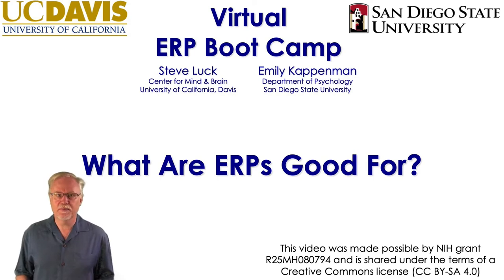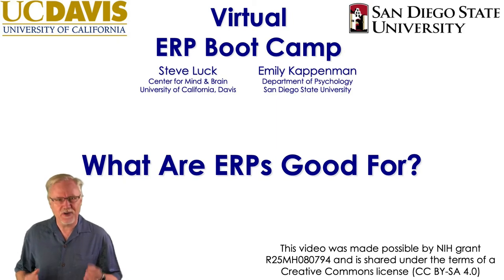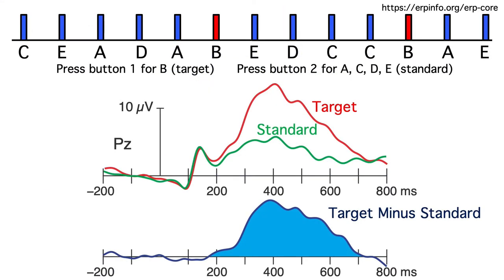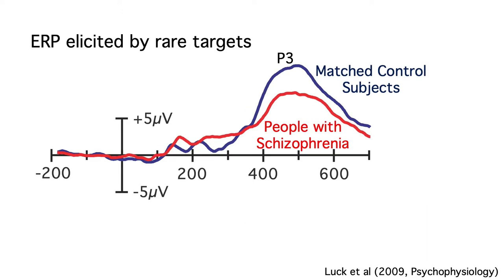You now know a lot about what ERPs are and how they are generated by the brain. But what are they actually good for? How can ERPs be used to answer important scientific questions that can't easily be addressed with other methods? For example, we can see that the P3 wave is larger for rare targets than for frequent standards. But does this tell us anything interesting about how the brain works? Many studies have shown that the P3 wave for oddballs is smaller in people with schizophrenia than in healthy control subjects. But what does this tell us about the nature of brain function in people with schizophrenia?